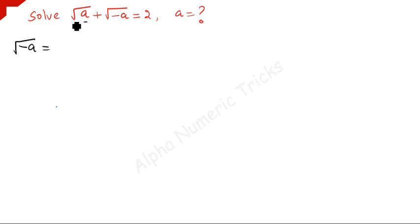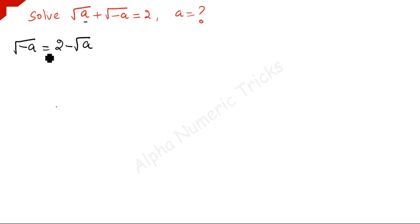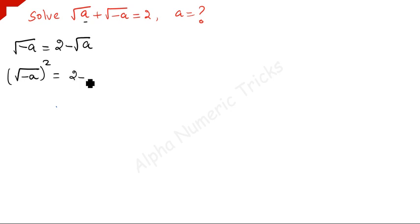Take the square root of a to the right-hand side, so it becomes negative square root of a. Now squaring on both sides: square root of negative a, the whole square, equals 2 minus square root of a, the whole square. The square and square root cancel, so negative a equals 2 minus square root of a, the whole square.